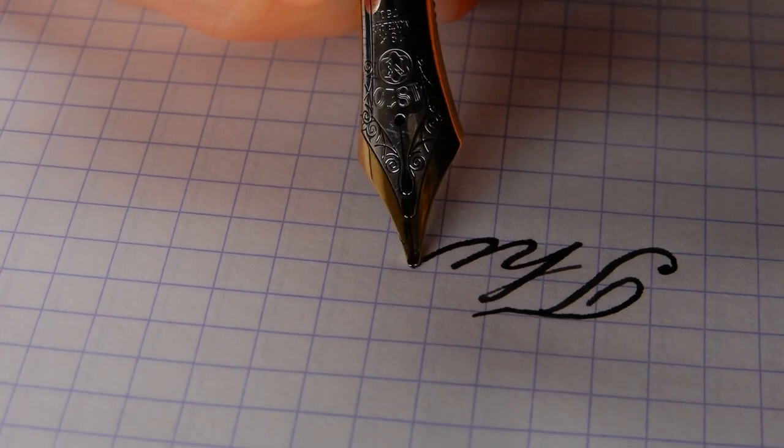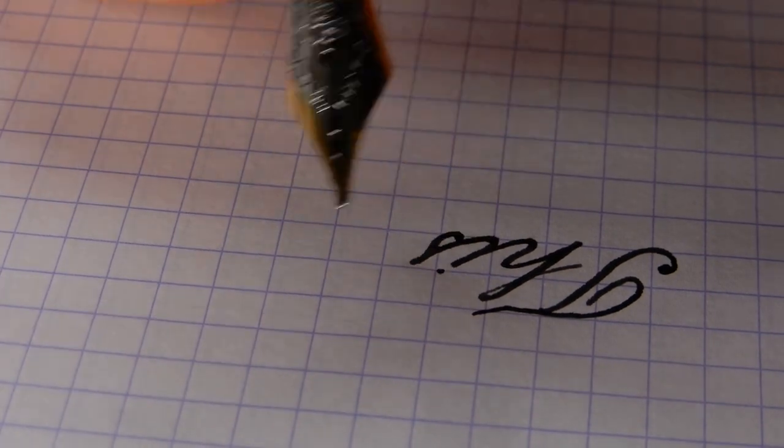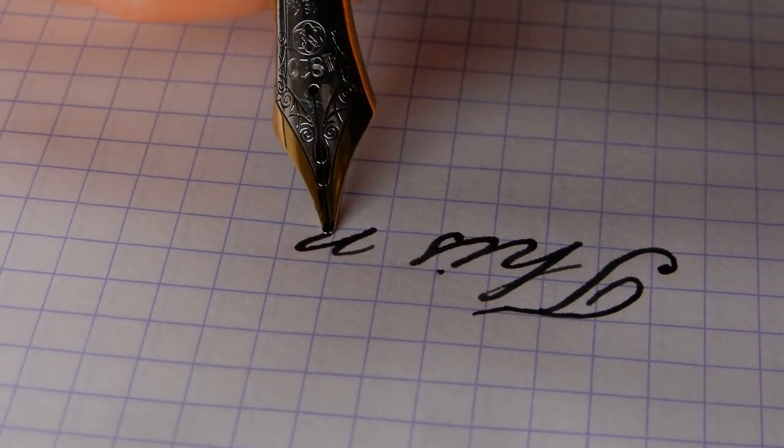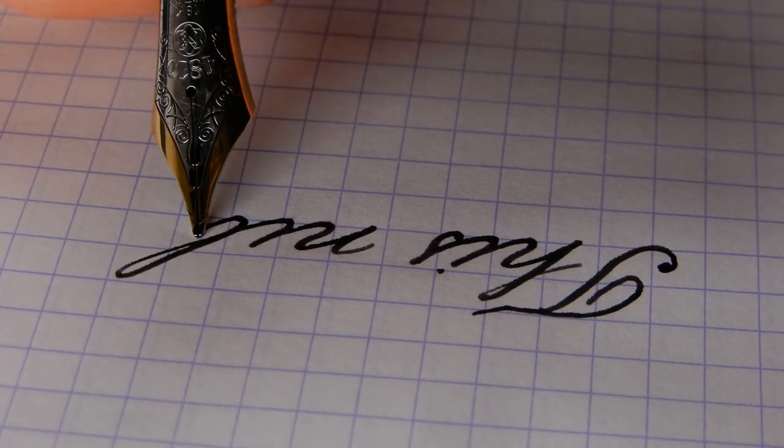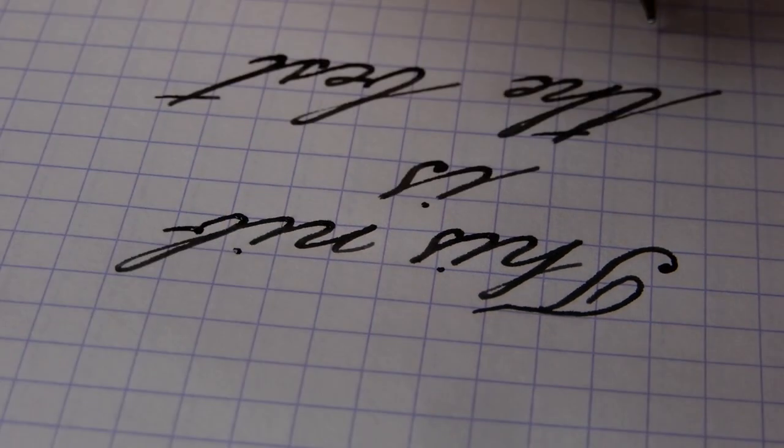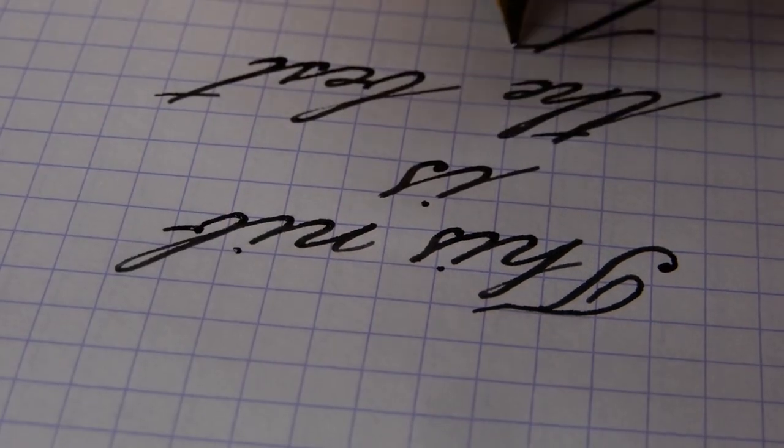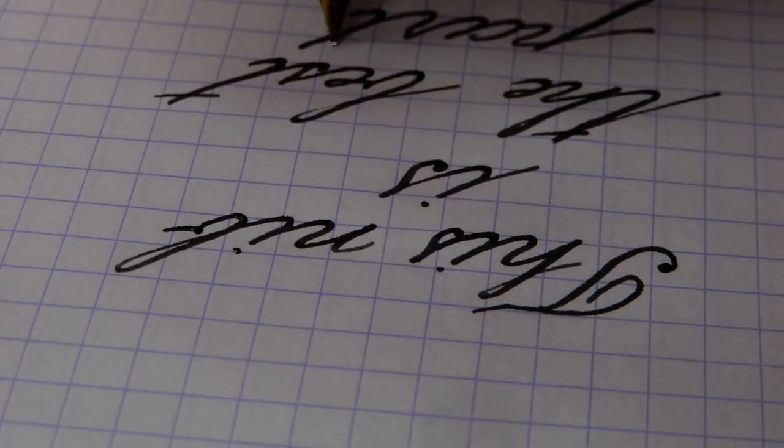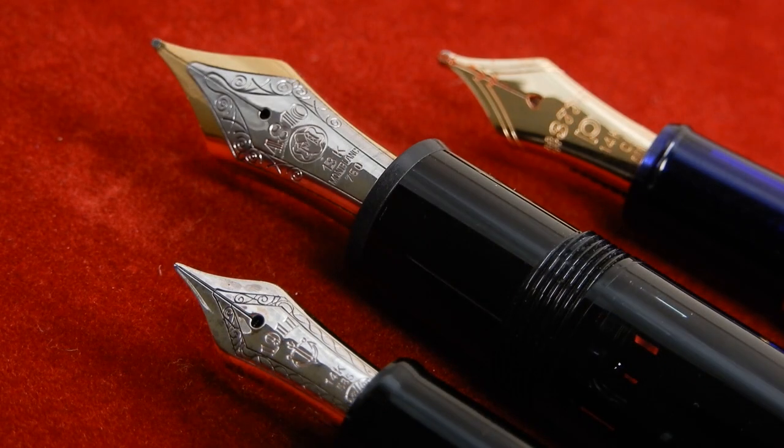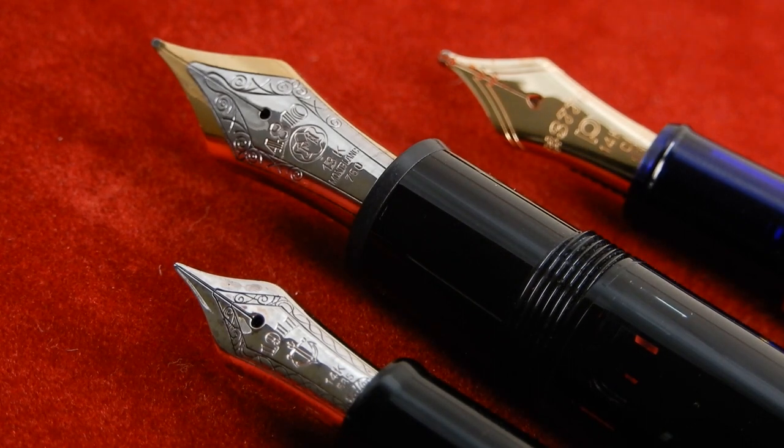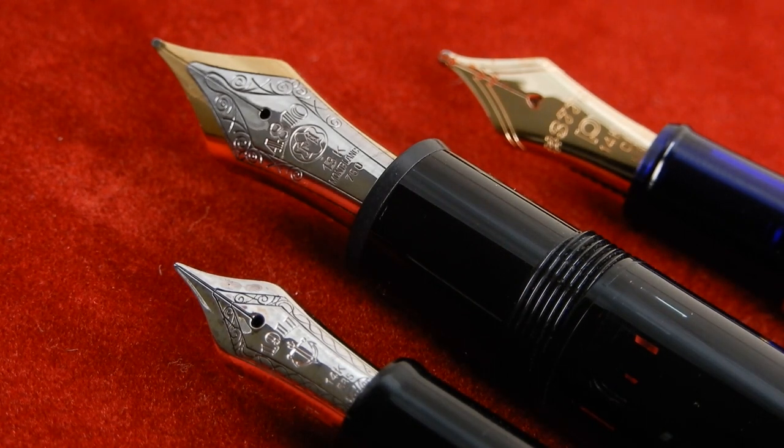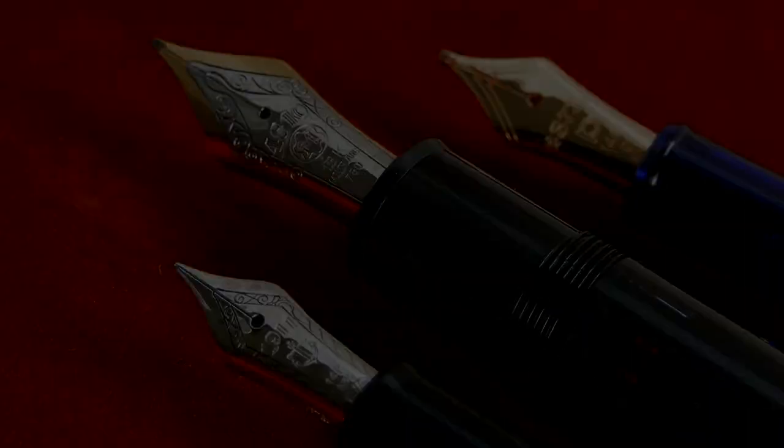However, what truly sets it apart from other fountain pens is its 26mm long, 18-karat gold, two-tone nib. Not because it is tastefully decorated in a way that has been imitated countless times, but because of how well it writes.